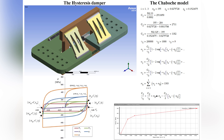The maximum counteracting force reaches 2567.6 kN. The maximum amplitude of the movements is plus or minus 138 mm. The force of transition to the state of fluidity is 498.51 kN.